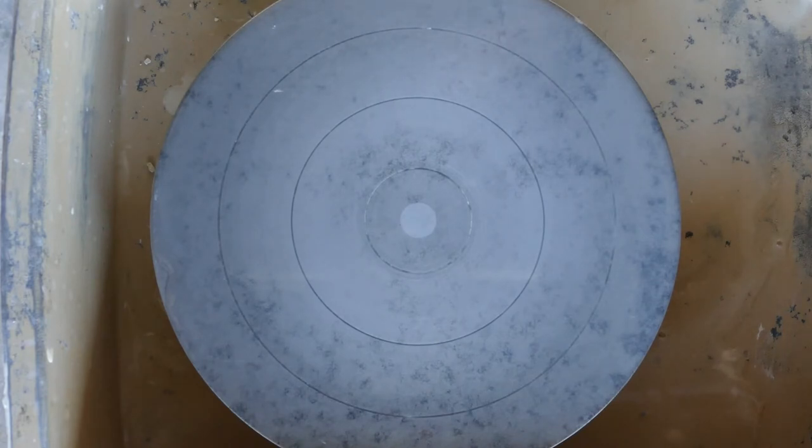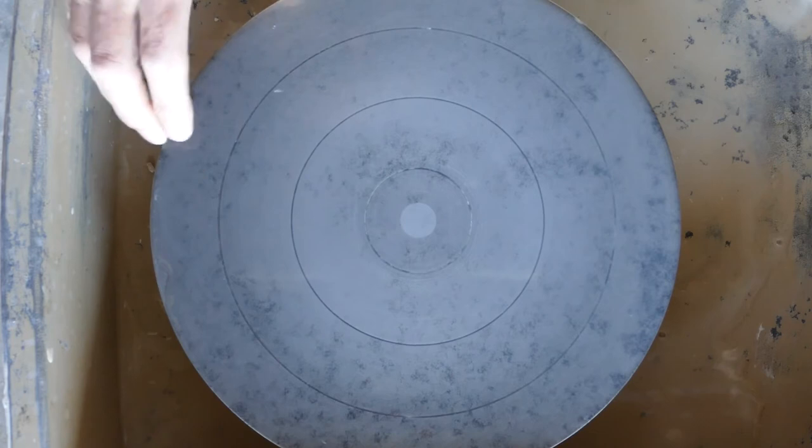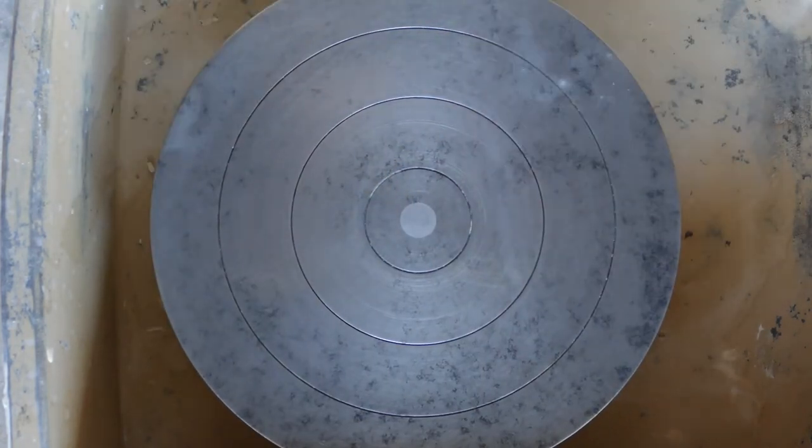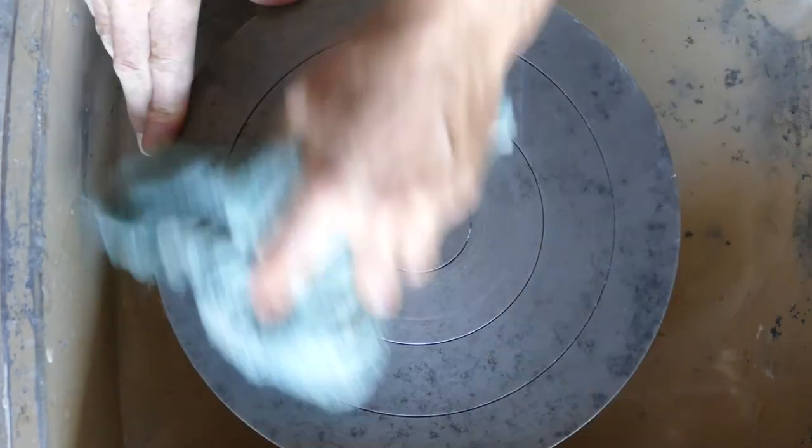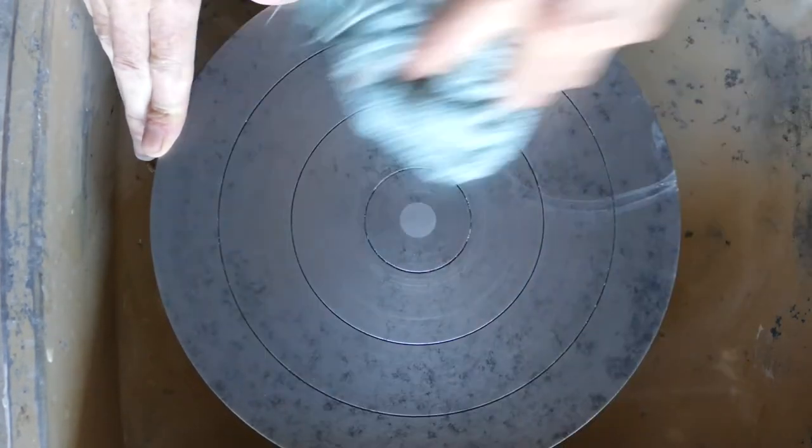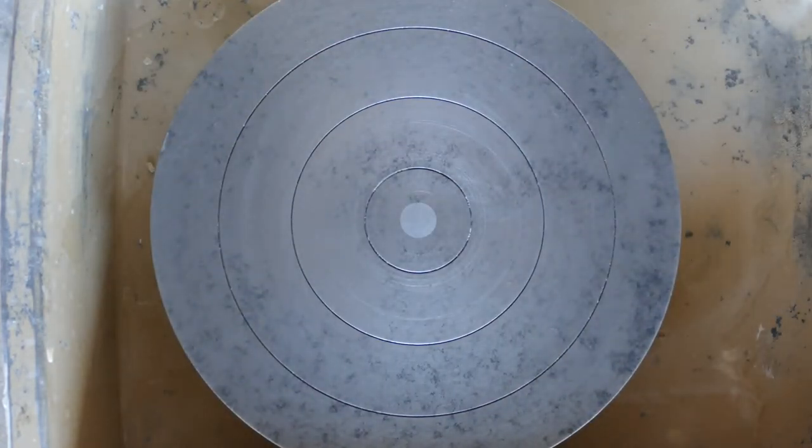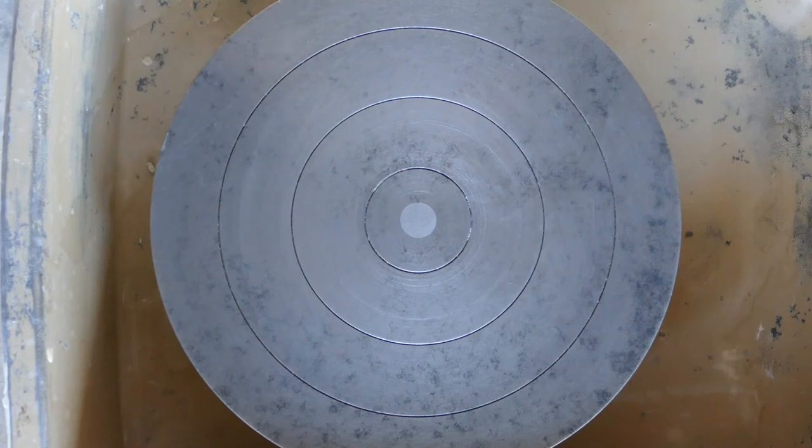So what we're looking for is the wheel that is just right. So we take our wedged or kneaded clay, and I would suggest you use around about 500 grams of clay to start with. It's big enough for you to be able to center it and cone it easily, but not too big that it'll get out of hand.